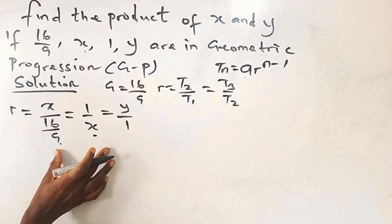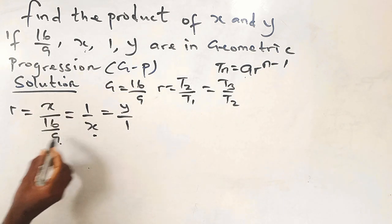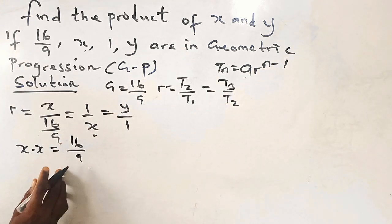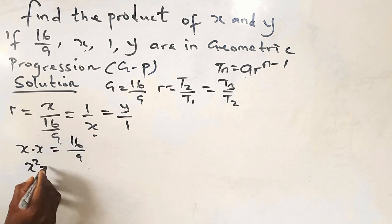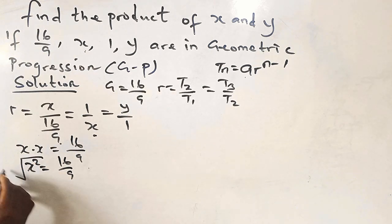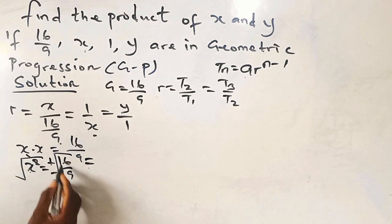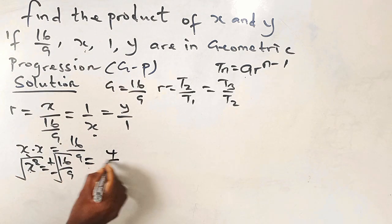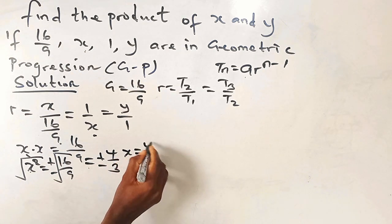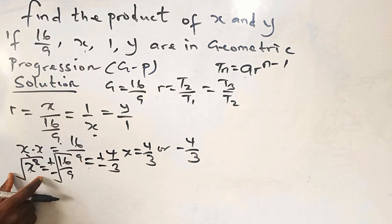Let's work with the first and second ratios together to determine the value of x. Since the ratios are equal, we have x times x equals 16 over 9. So x squared equals 16 over 9. Taking the square root of both sides, we introduce plus or minus: x equals plus or minus 4 over 3.